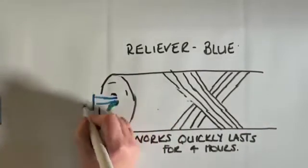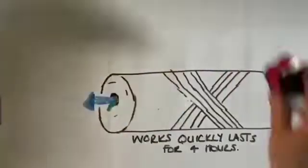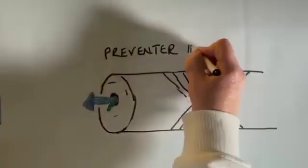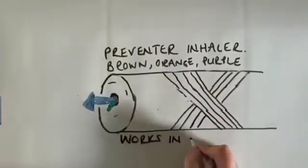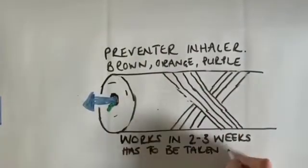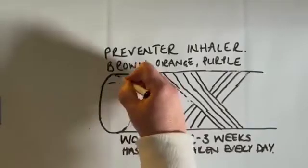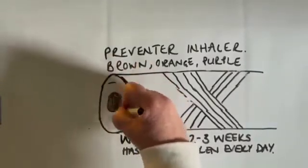To help the inside of your airway get better, you need a preventer inhaler which can be brown, orange, or purple. This takes two to three weeks to work and you need to take it every day. This makes your airway bigger. Your airways go back to their natural state and are wide open again.